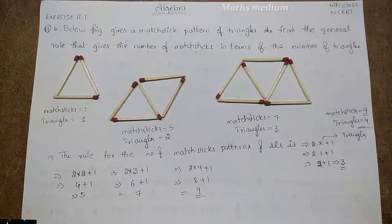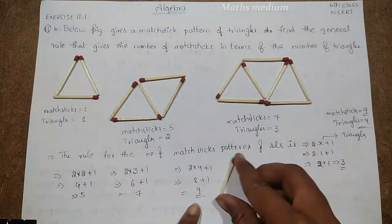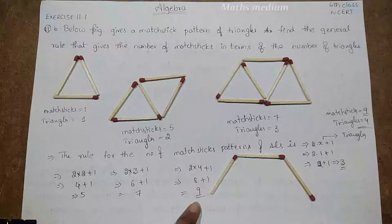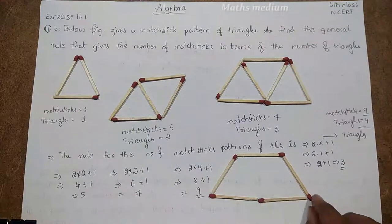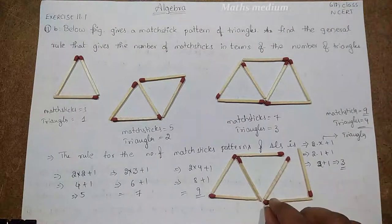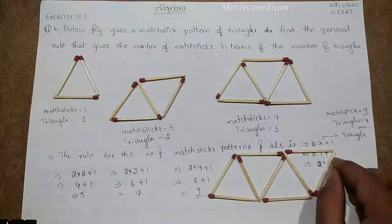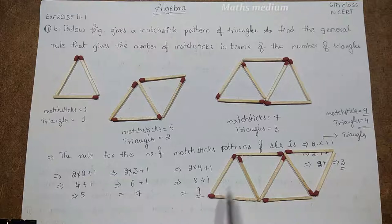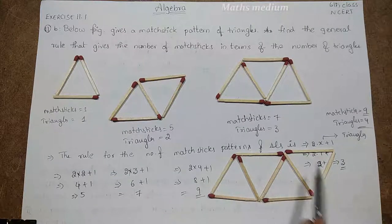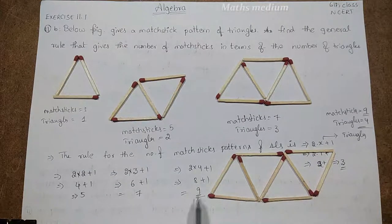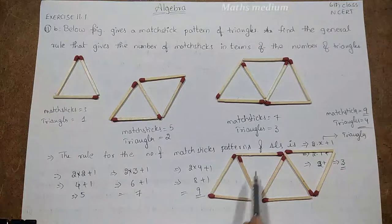So if you see, by using 9 matchsticks, see 1, 1, 2, 3, 4, 5, 6, 7, 8, 9. By using 9 matchsticks, we are forming 4 triangles: 1, 2, 3, 4.